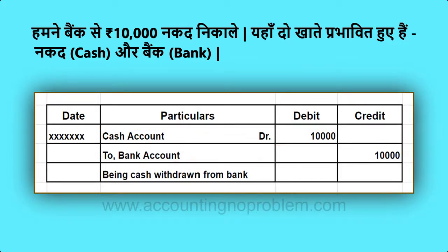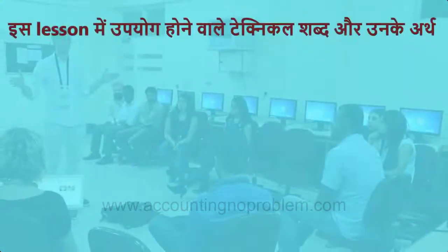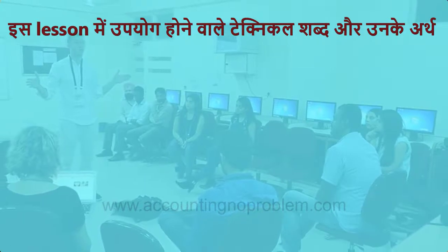यहाँ आपके मन में तीन सवाल उठेंगे। पहला — खाता क्या होता है, इसका जवाब हम अगली वीडियो में विस्तार से देंगे। दूसरा — कौन सा खाता debit होगा और कौन सा credit होगा, इसके नियम हम Golden Rules of Accounting में बताएंगे। और तीसरा — यह प्रारूप क्या है, जिसे हम आगे journal के अंतर्गत विस्तार से समझाएंगे।